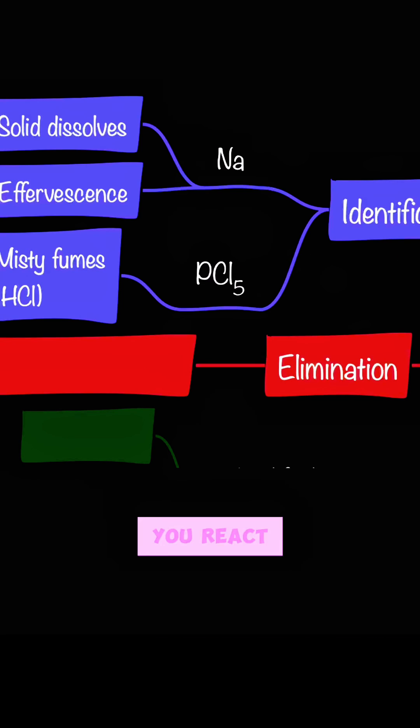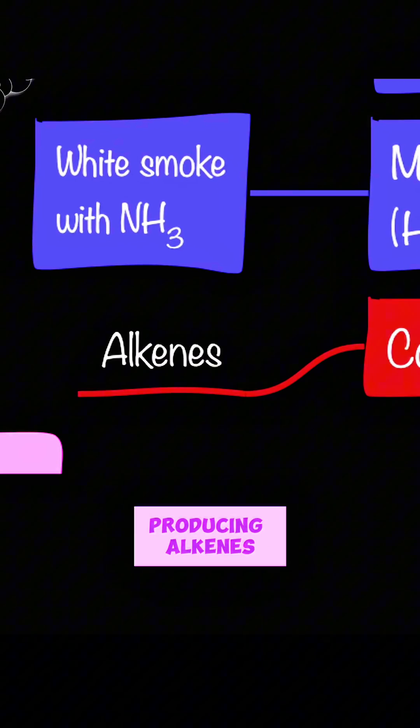Elimination of alcohols is when you react alcohols with concentrated sulfuric acid, and in this case you'll be producing alkenes.